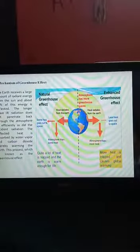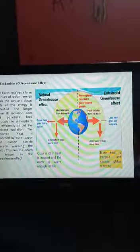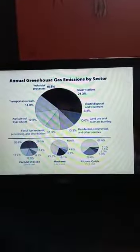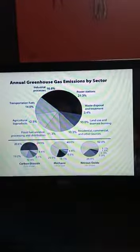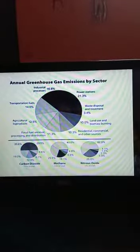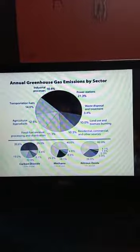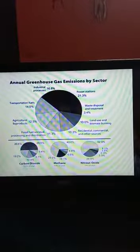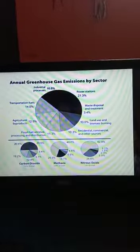Quite a lot of heat traps and Earth is warm enough for life, but the more heat is trapped causes global warming. Annual greenhouse gas emission by different sectors: industrial process - 16.8%, power station - 21.3%, transportation fuel - 14.0%, waste disposal and treatment - 3.4%, agriculture byproducts - 12.5%, land use - 10.0%, biomass burning and fossil fuels - 11.3%, residential, commercial, and other resources - 10.3%.